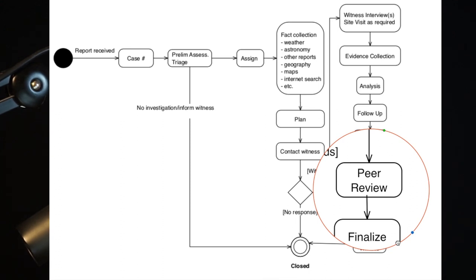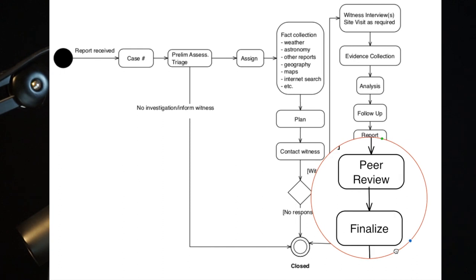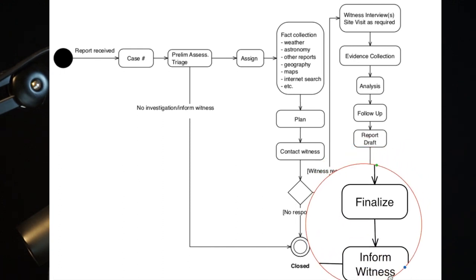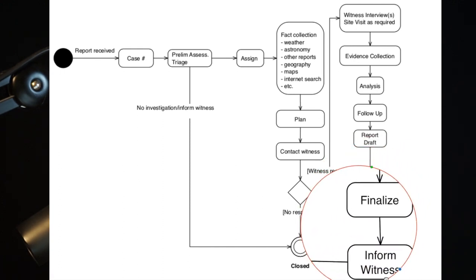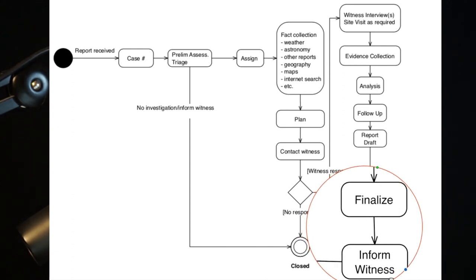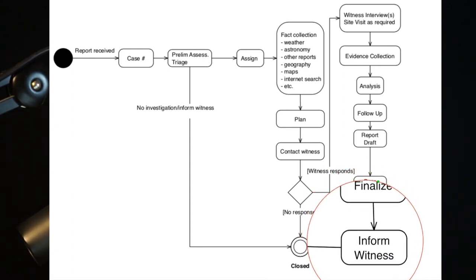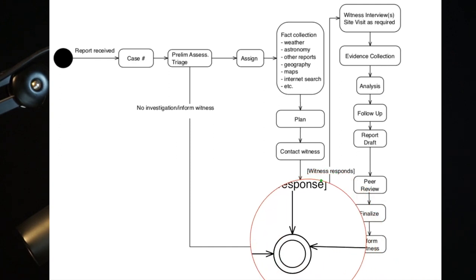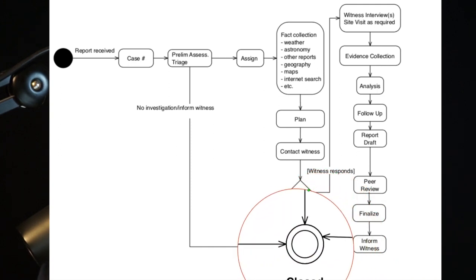Following a healthy round of peer review and good-natured, if spirited debate, the investigator will correct and finish the report for final review and case closure. A redacted version of the report for public distribution is usually prepared as well. The witnesses are then informed of our conclusions and we mark the case closed. For cases with a good amount of visual content, a video case summary may also be prepared, but this is a lower priority. We may also make an audio report for the API case files podcast.